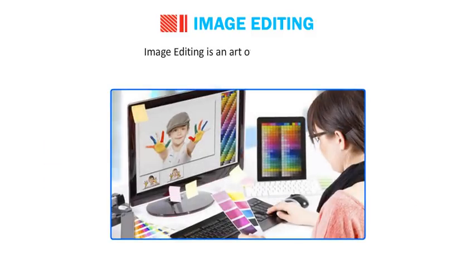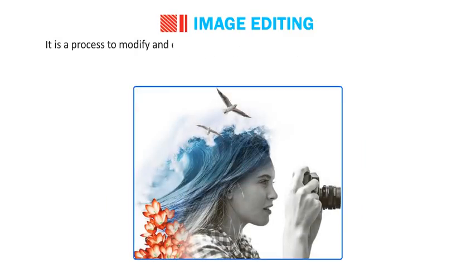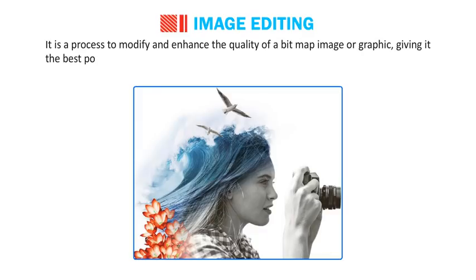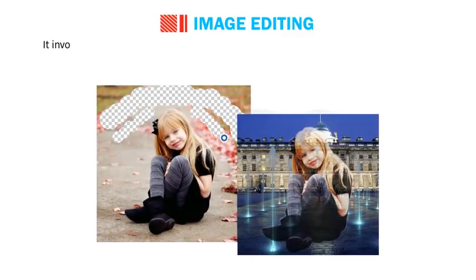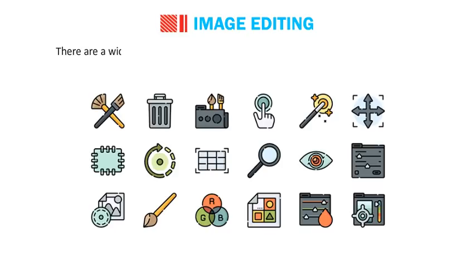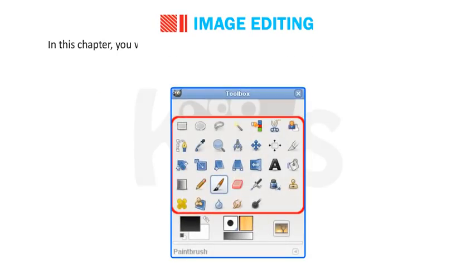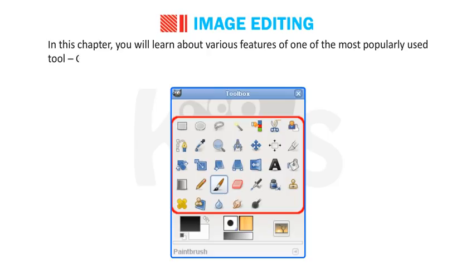Image editing is an art of infinite creativity. It is a process to modify and enhance the quality of a bitmap image or graphic, giving it the best possible look. It involves removal of unwanted elements with the application of various tools or effects to bring more color and life to the image. There are a wide range of competent image editing tools available on the internet. In this chapter, you will learn about various features of one of the most popularly used tools – GIMP.